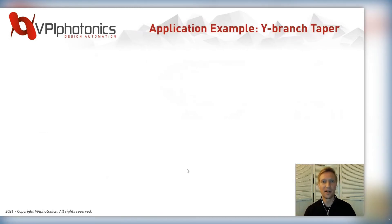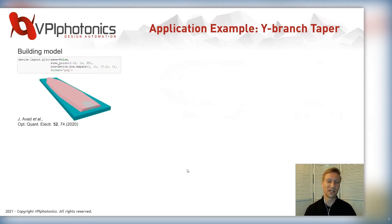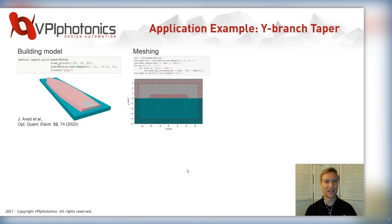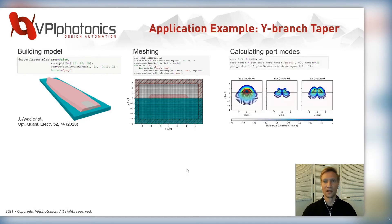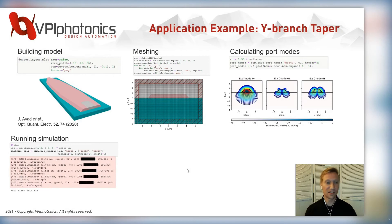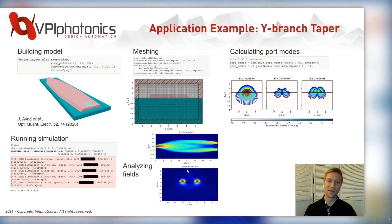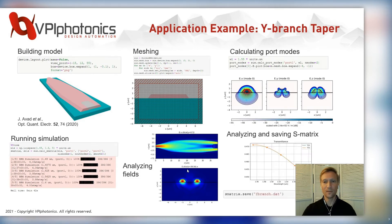I'll take you through a fairly simple application example of a Y-branch taper. We took this example from literature and built the model in our software. We defined the geometry needed for the Y-branch, set up the meshing — all using Python, so it's easy to do. We calculated the port modes, and you can see some of the cross-sections shown here. Once everything was set up, we ran the simulation and analyzed the field — you can see a top-down view of the fields as well as a cross-section of the two output ports. We confirmed our results by comparing to the measured results from the paper.